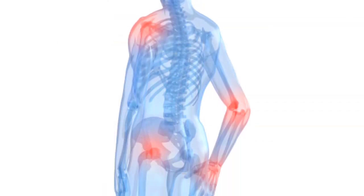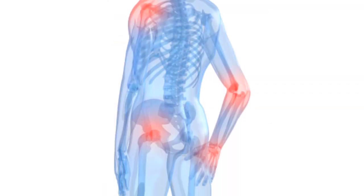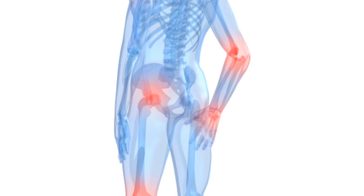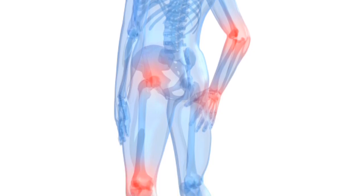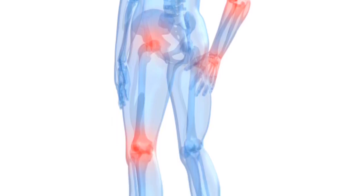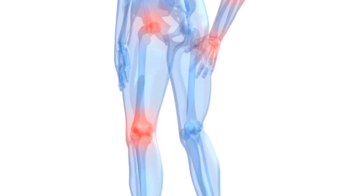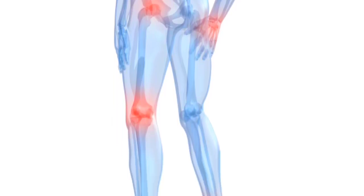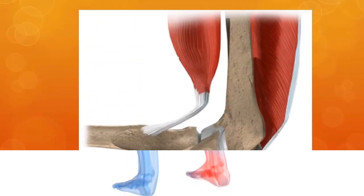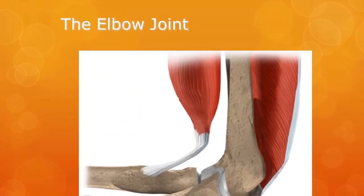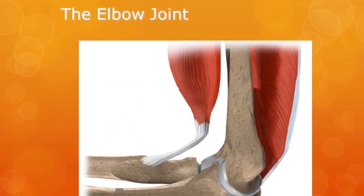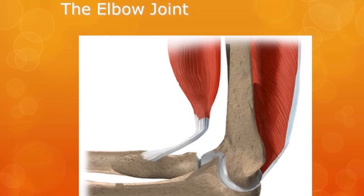Different joints allow different types of movement. For example, the spine is made of a number of small bones, which allows the back to be flexible — obviously helpful for high jumpers. Moving on to different types of joints: the elbow joint is a hinge joint.